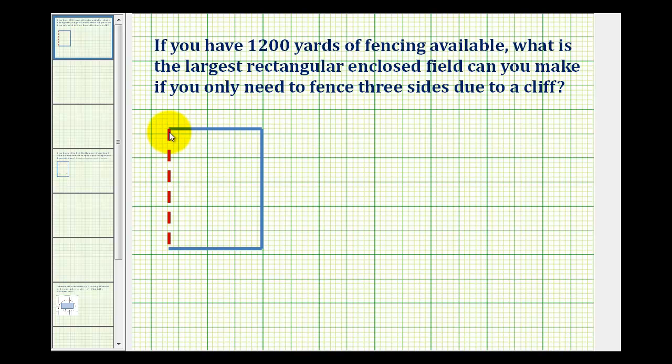So let's assume this red side here is the cliff. We want to enclose the largest rectangular field with 1,200 yards of fencing. Let's start by labeling our diagram.